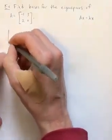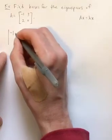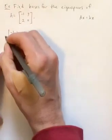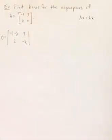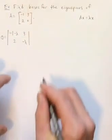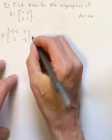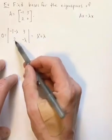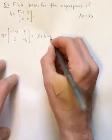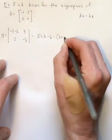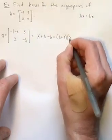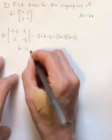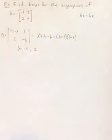We've seen before that I'm just going to subtract lambda from the main diagonal entries and set that determinant equal to 0. If I multiply these two, I get lambda squared plus lambda and then subtracting 6. And that does factor as lambda plus 3 lambda minus 2. I can see that lambda could be negative 3 or it could equal 2.